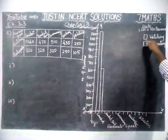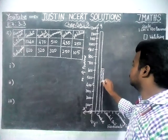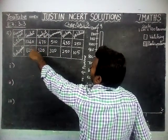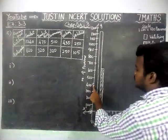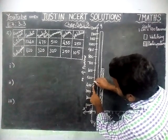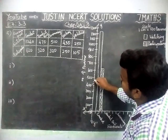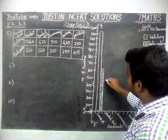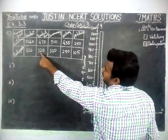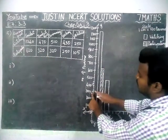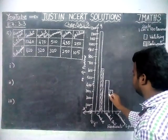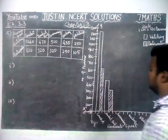Next, basketball. Watching number is 470. 400 is there, 500 is here. In between: 410, 420, 430, 440, 450 — the middle line is 450 — then 460, 470. So 470 is marked here. Next, participating members: 320. 300 is here, after 300: 310, 320, that is coming here. To differentiate the participating members, we are crossing the bar graph.